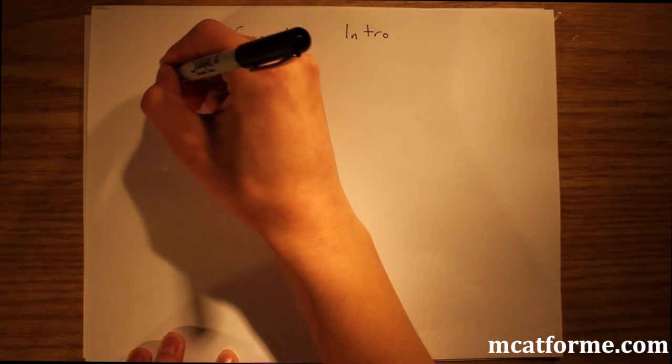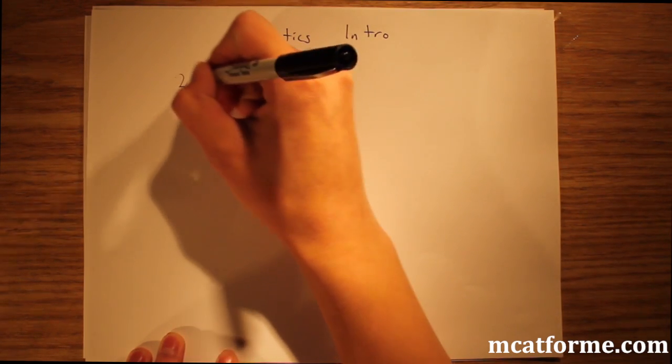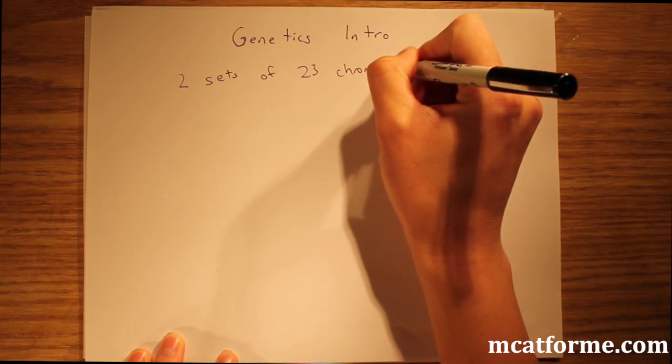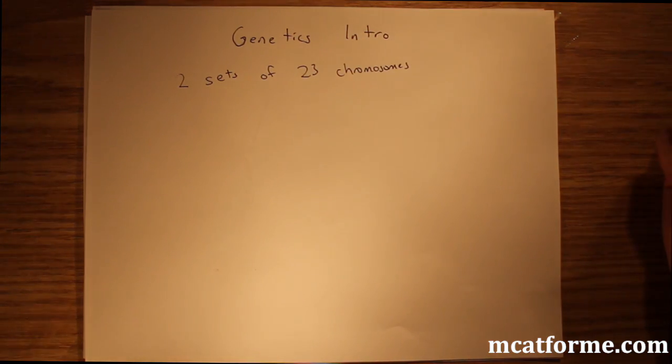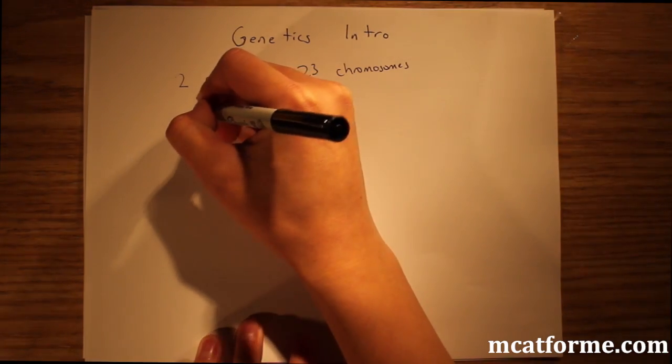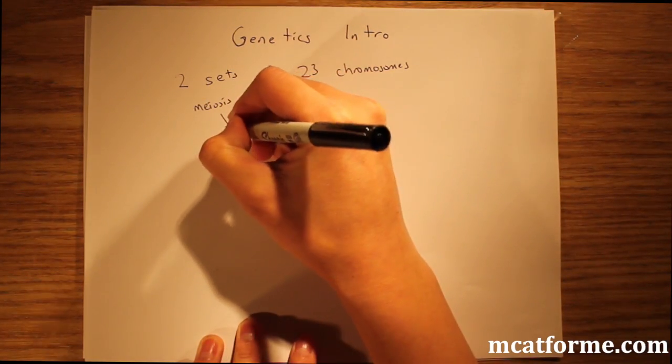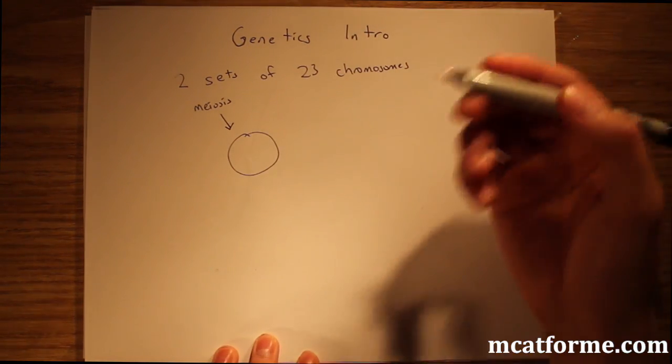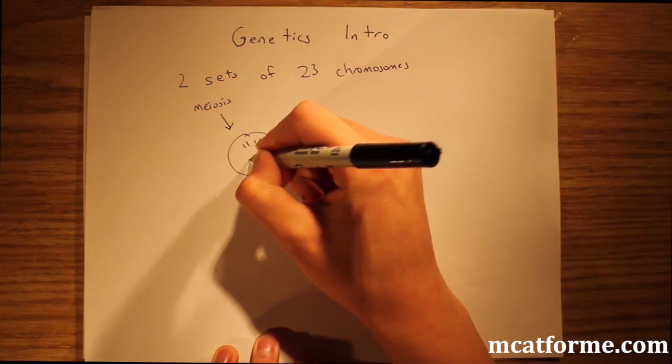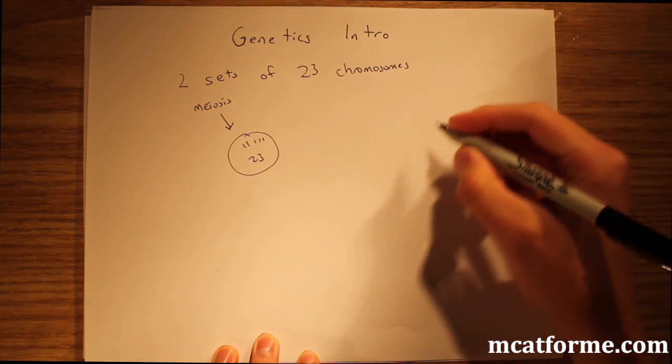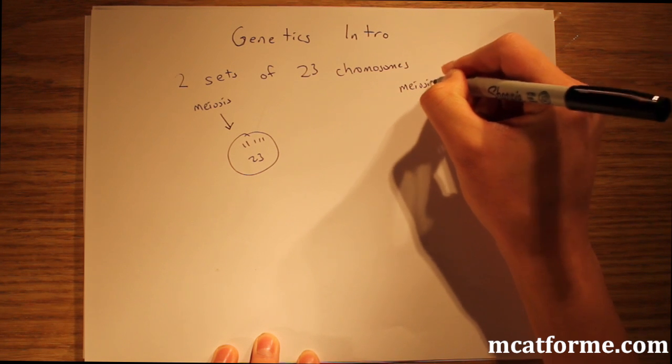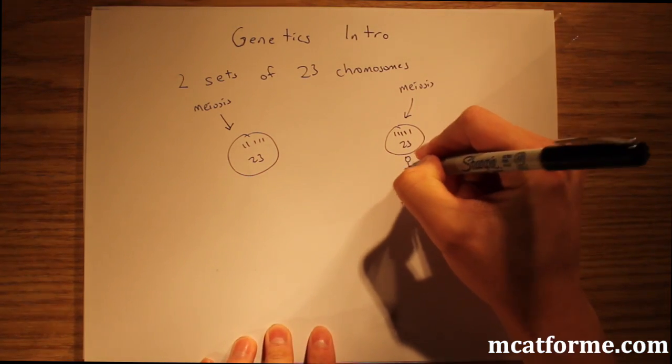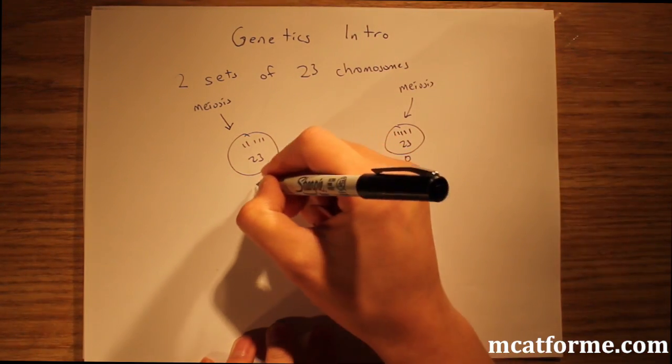So the first thing we have to know is that in our cells, human cells, we have two sets of 23 chromosomes. Two sets means we get a set from our mom and a set from our dad. The mom undergoes meiosis and gets a daughter cell which would be the egg with 23 chromosomes, and the father does the exact same thing.